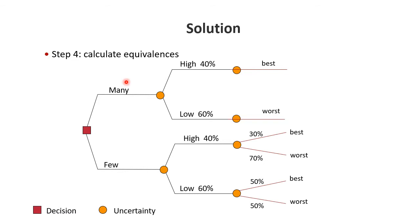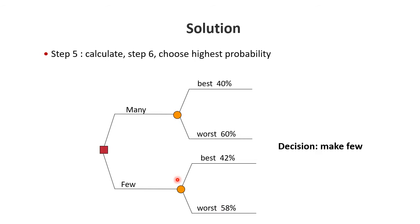Now we solve the problem by calculating which choice gives the highest probability of 'best'. For the few-wells branch, we multiply 30 percent times 40 percent plus 50 percent times 60 percent, which comes out to 42 percent best. For many wells we get 40 percent. So we notice that with few wells we get best 42 percent of the time versus 40 percent for many wells — the decision is to drill few wells.